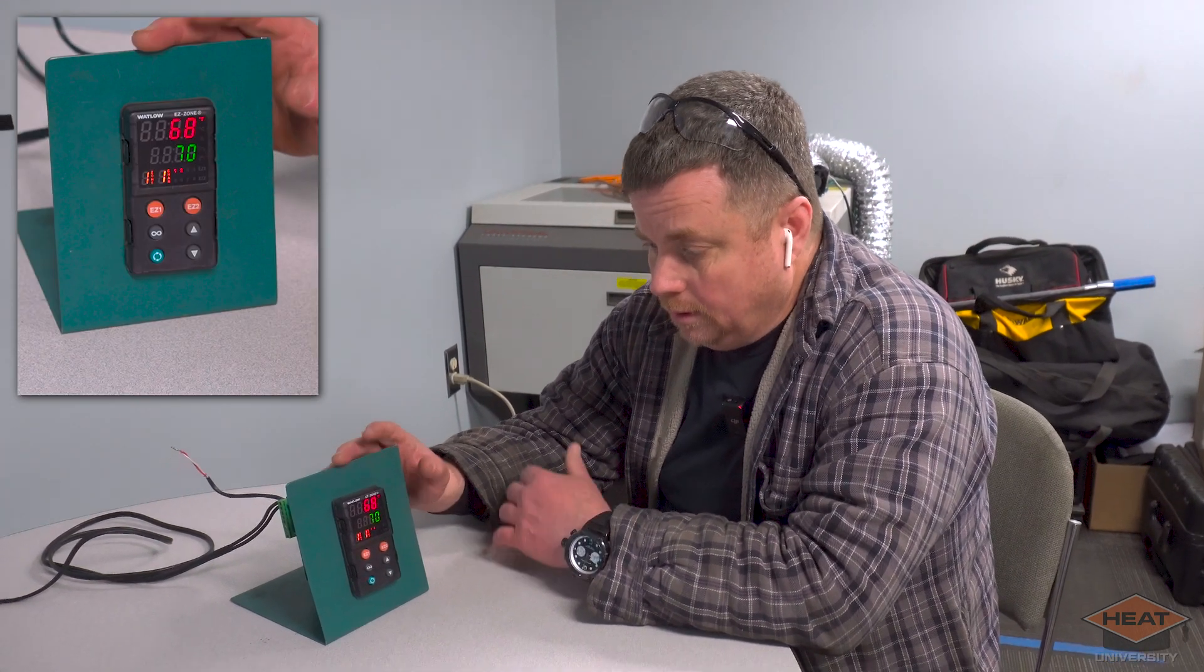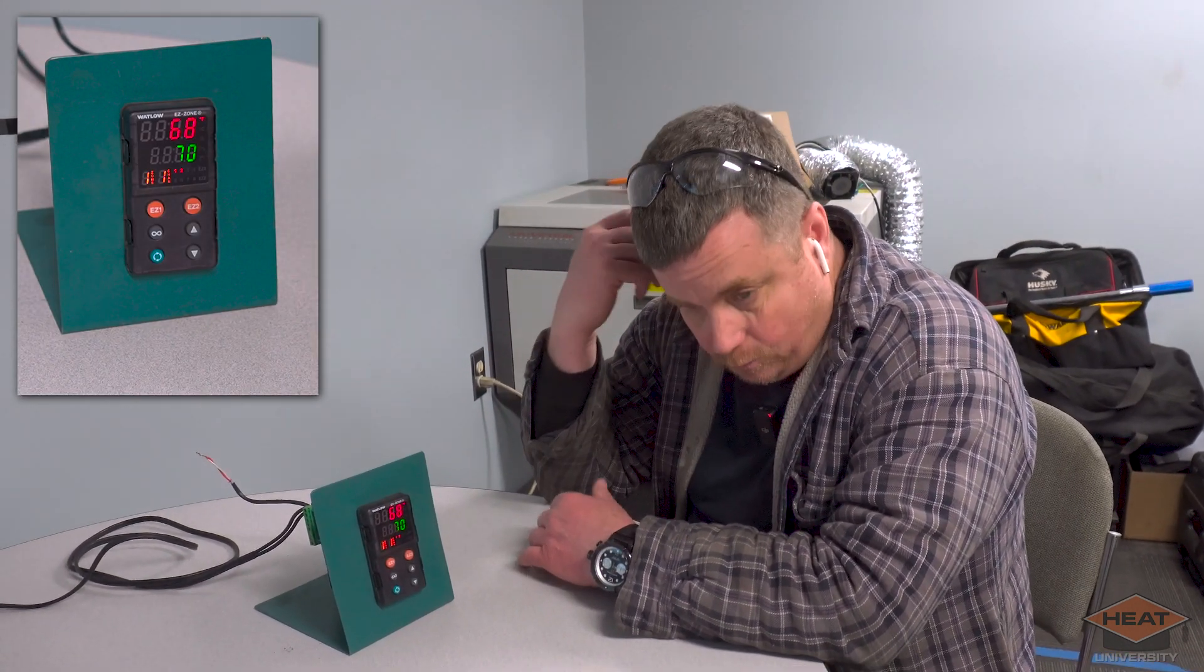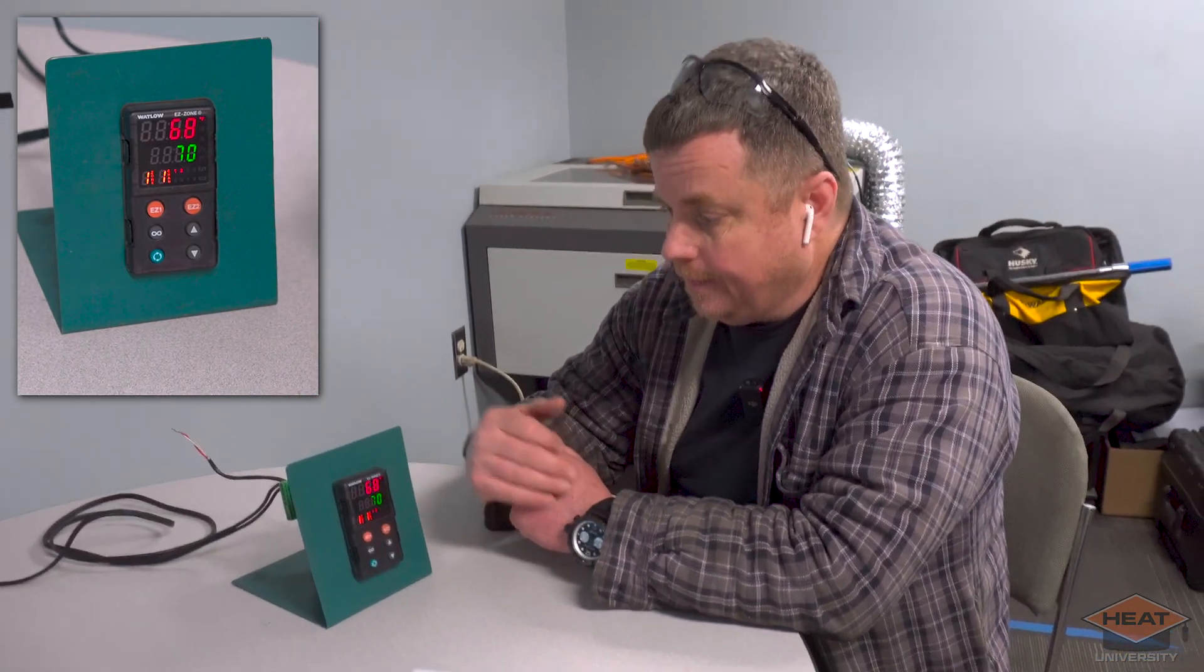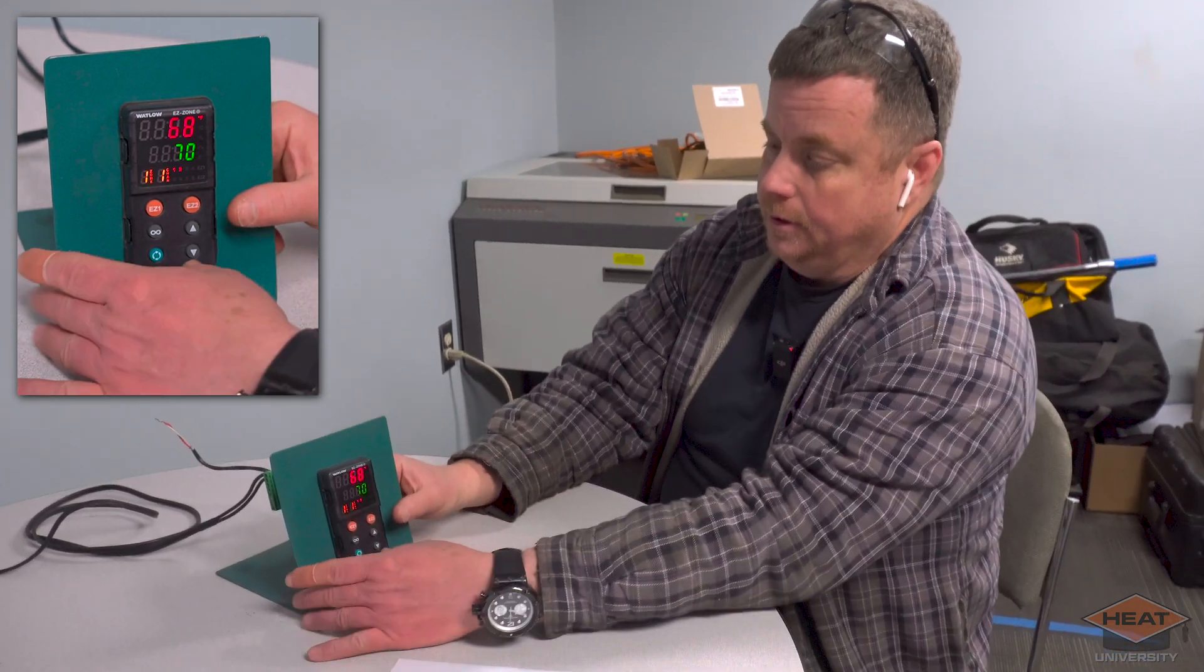Okay, here we are. This is a typical EasyZone controller that I'm going to show you how to set up if you just have a heat system. The first thing I'm going to do, since this controller is already set up, is hold down the up and down arrows.